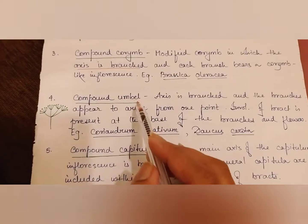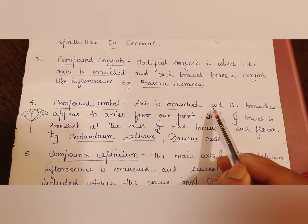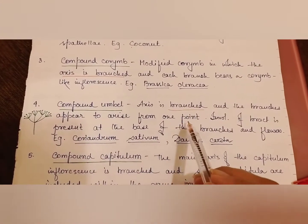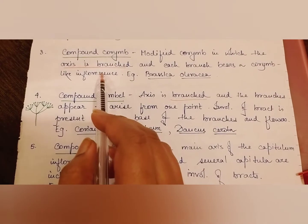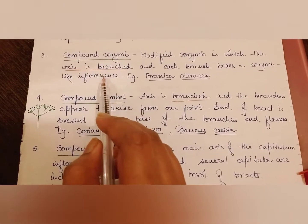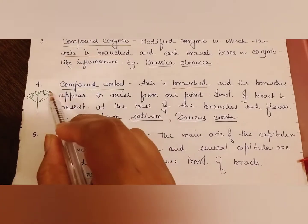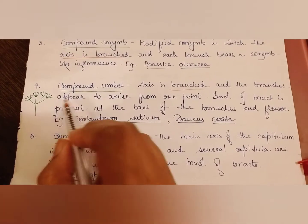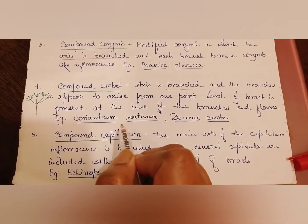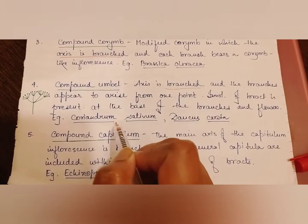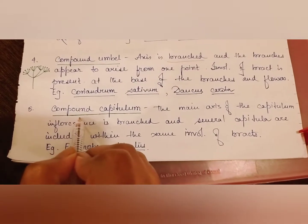Next is compound umbel: the axis is branched and the branches appear to arise from one point. An involucre of bracts is present at the base of the branches and the flowers. Like umbel, the flowers are at the same level with equal-length pedicels, but here the branches themselves radiate from one point. It is found in coriander (Dhania) and Daucus carota (carrot).